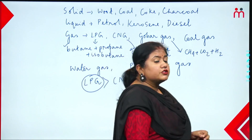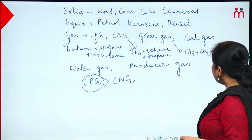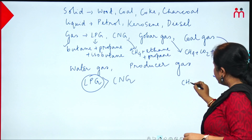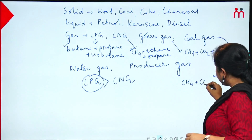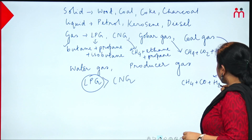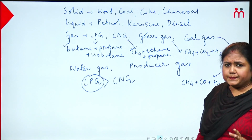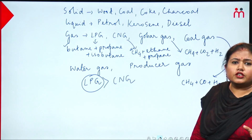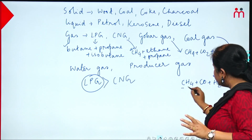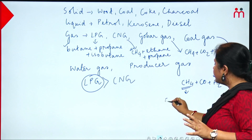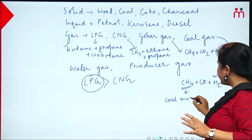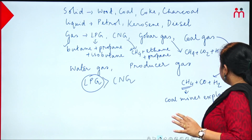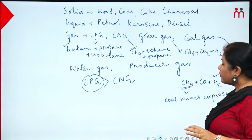Next is coal gas. The main component of coal gas is methane. This gas — methane — is responsible for coal mine explosions. Coal gas, due to the presence of methane, causes coal mine explosions.